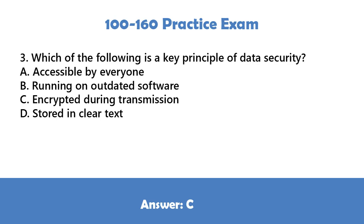Question 3: Which of the following is a key principle of data security? A. Accessible by everyone, B. Running on outdated software, C. Encrypted during transmission, D. Stored in clear text. Answer: C.